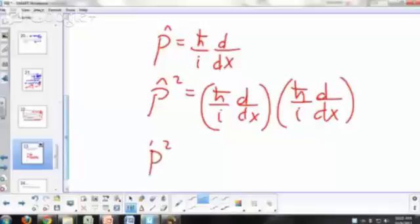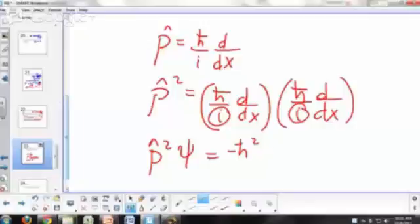So if you took p squared psi, you have h bar squared, right? And i times i is negative 1. So that's negative h bar squared, second derivative with respect to x. If you apply that on psi, how do you prove that it's an eigenfunction?